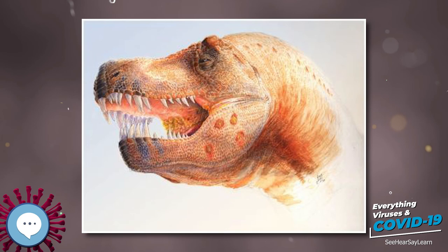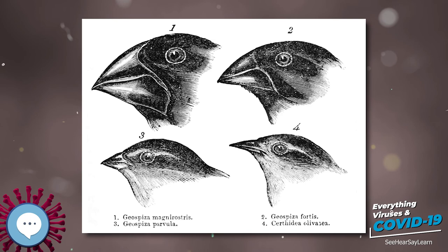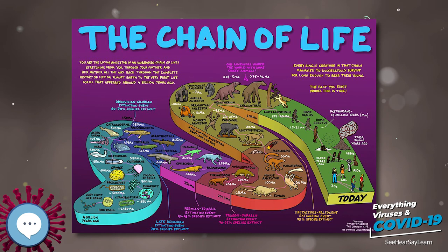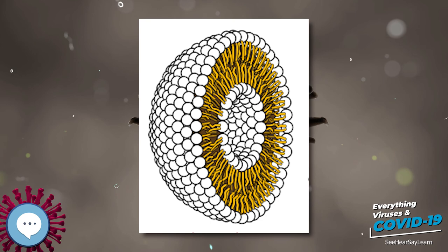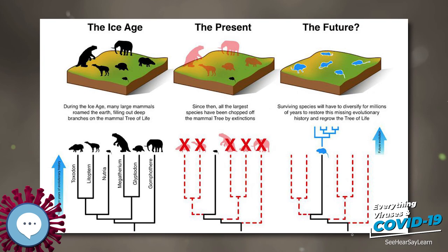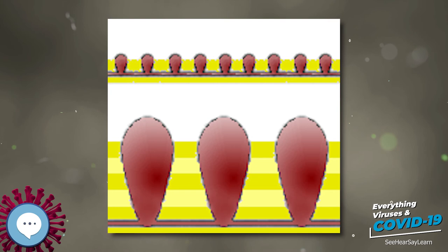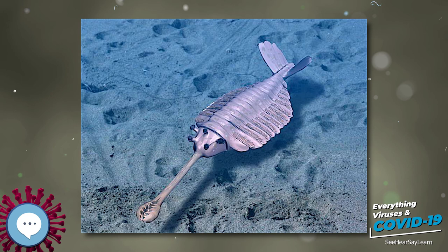The synapsid pelycosaurs and their descendants the therapsids are the most common land vertebrates in the best-known Permian, 298.9 to 251.902 Ma, fossil beds. However, at the time these were all in temperate zones at middle latitudes, and there is evidence that hotter, drier environments nearer the equator were dominated by sauropsids and amphibians. The Permian-Triassic extinction event wiped out almost all land vertebrates, as well as the great majority of other life. During the slow recovery from this catastrophe, estimated to have taken 30 million years, a previously obscure sauropsid group became the most abundant and diverse terrestrial vertebrates. By the Middle Triassic, archosaurs were the dominant land vertebrates. Dinosaurs distinguished themselves from other archosaurs in the late Triassic, and became the dominant land vertebrates of the Jurassic and Cretaceous periods, 201.3 to 66 Ma.